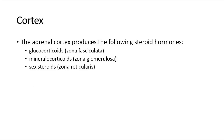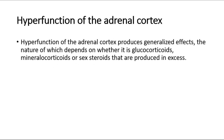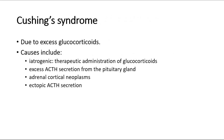For the adrenal cortex, the adrenal cortex produces the following steroid hormones: glucocorticoids from zona fasciculata, mineralocorticoids from zona glomerulosa, and sex steroids from zona reticularis. The conditions are divided into hyperfunction and hypofunction of the cortex. Hyperfunction of the adrenal cortex produces generalized effects, the nature of which depends on whether glucocorticoids, mineralocorticoids, or sex steroids are produced in excess.